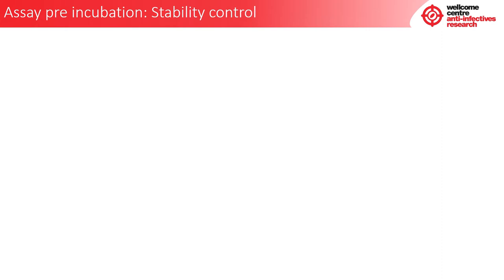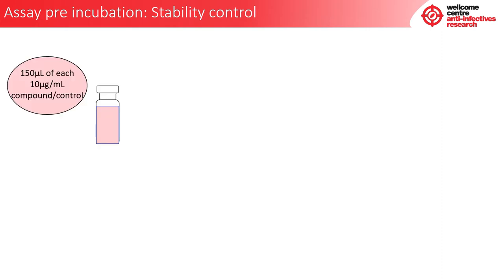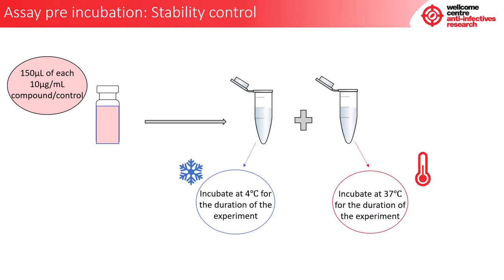Once the left-hand sample side of the dialysis block has been dealt with, the stability controls must be made. To do this, add 150 microlitres of each 10 microgram per ml compound or control into two separate Eppendorf tubes, labelled according to the compound number. One Eppendorf must be incubated at 4 degrees Celsius and the other at 37 degrees Celsius for the duration of the experiment. This is important to check the stability of your compounds during the assay.